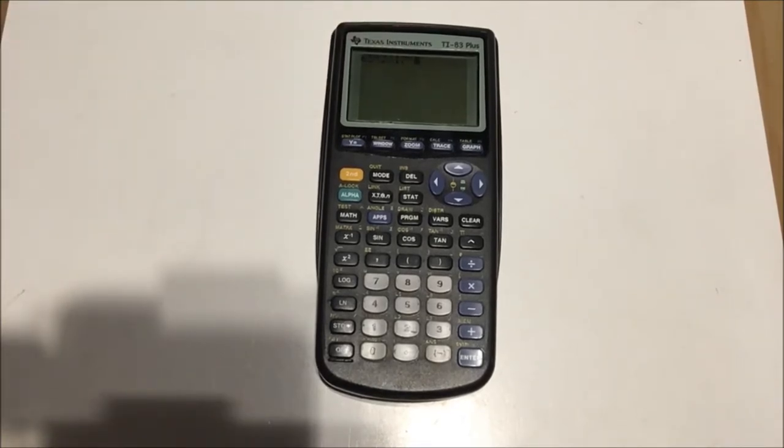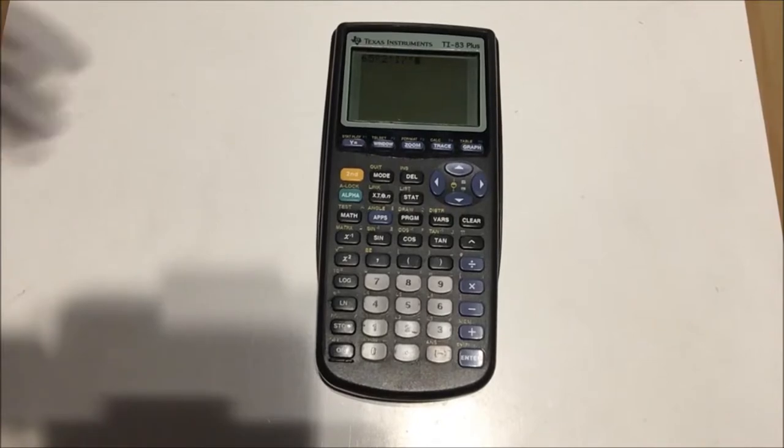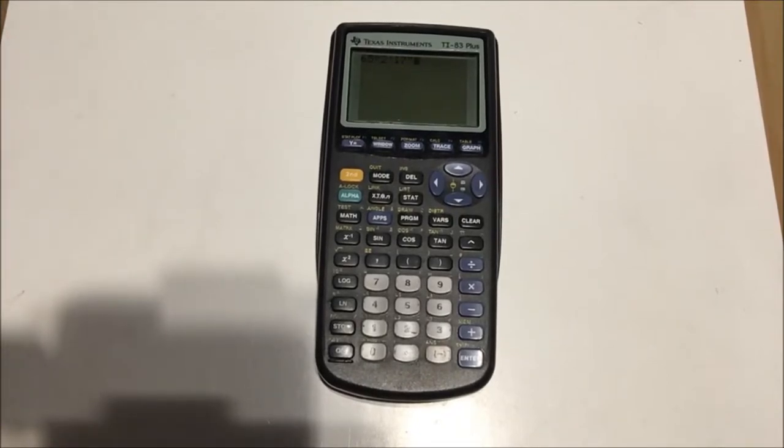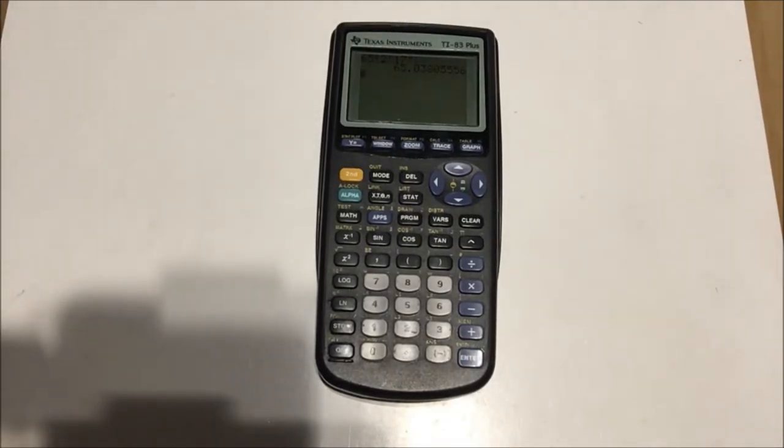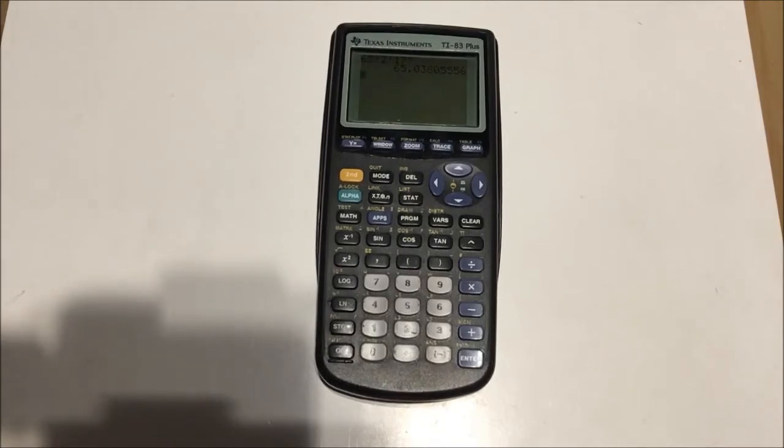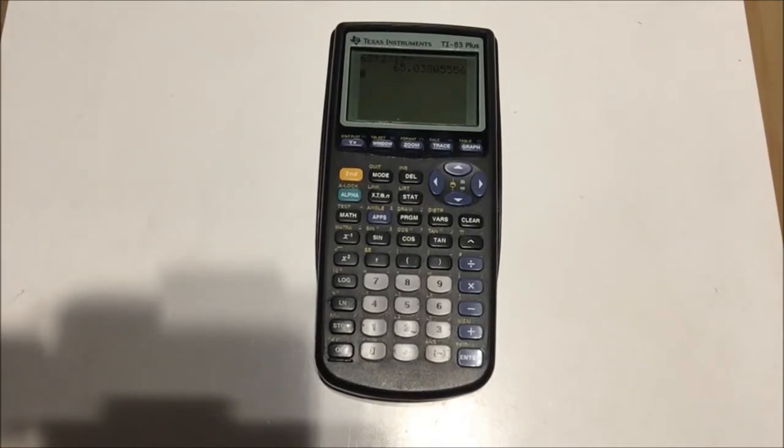Minutes. 65 degrees, 2 minutes, 17 seconds. Now you might be saying, wait, where do I tell to convert to decimals? Well, you don't. You just press enter and it does it automatically. Aha! 65.03, etc. That is decimal degree form of this angle.